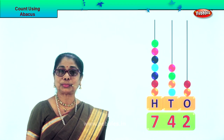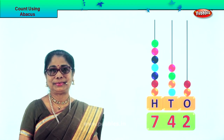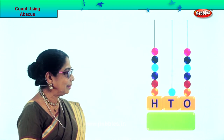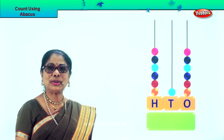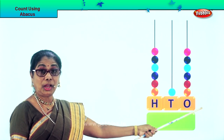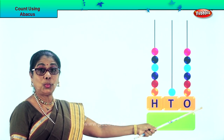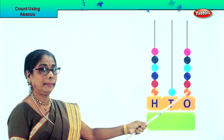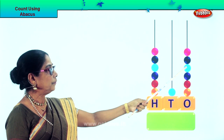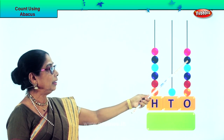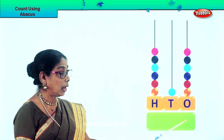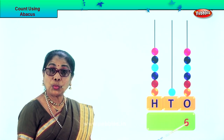Learning to count using abacus. Let's look at another sum. First, what shall we count? The 1s. Count the beads in the 1s place: 1, 2, 3, 4, 5, 6. There are 6 beads, so we put down number 6 in the 1s place.